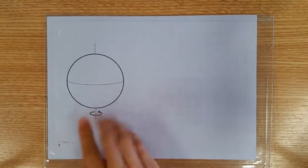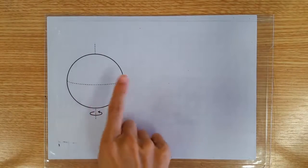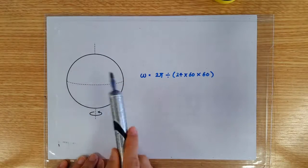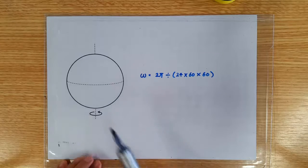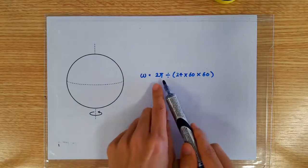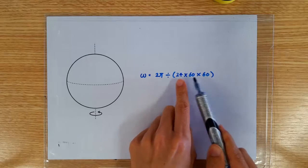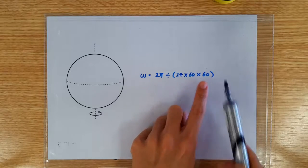Hello, in this video I'm going to talk about the rotational speed of the Earth. We all know that the Earth makes one revolution in one day, so the Earth is turning 2π radians every 24 hours times 60 minutes times 60 seconds.